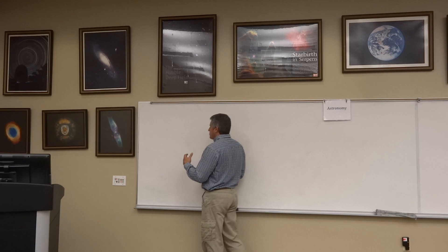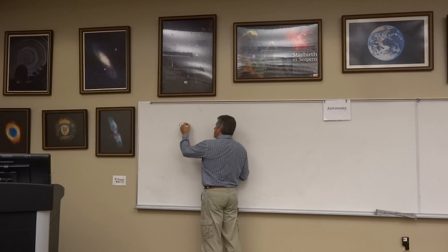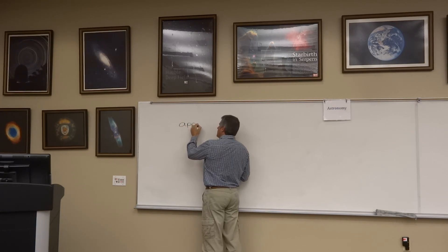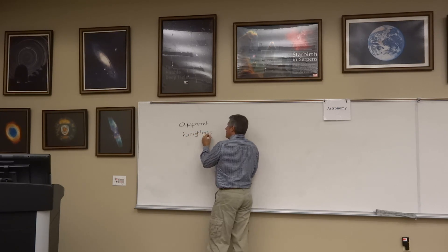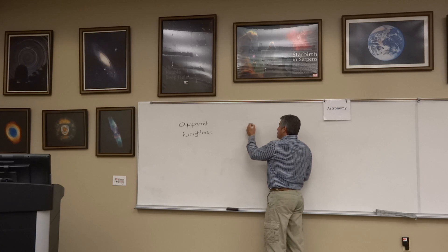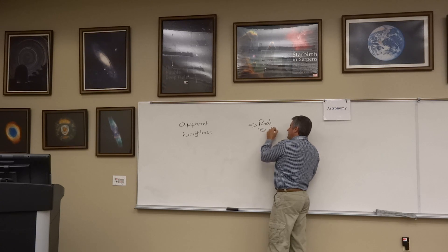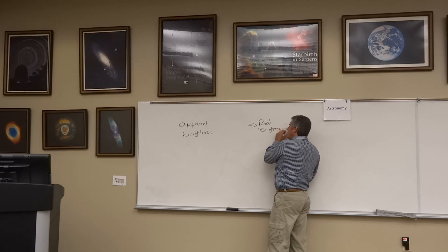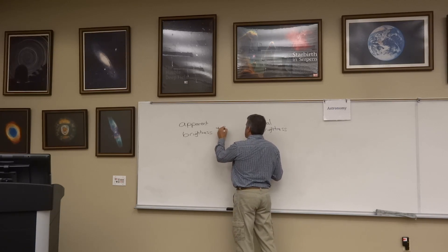The first thing we ask ourselves is: what's the range of brightnesses of stars? But when we look out at the sky, all we can tell is a star's apparent brightness — how bright it appears from our perspective. Does that have something to do with a star's real brightness? It does, but in order to figure out what a star's real brightness is, we need to combine what we know about its apparent brightness with its distance.